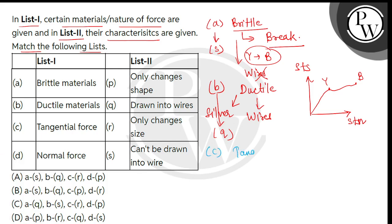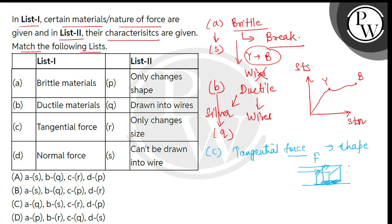Entry C में हमें बताया हुआ है tangential force। अगर हम किसी भी body पर एक tangential force apply करेंगे, तो इससे वहाँ पर shear के कारण सिर्फ shape change होगी। For example, एक cube को show करते हैं जिसका bottom surface fix है और upper surface पर tangential force F apply करते हैं। तो यह cube parallelepiped के form में convert हो जाएगा, और shear angle theta produce हो जाएगा।